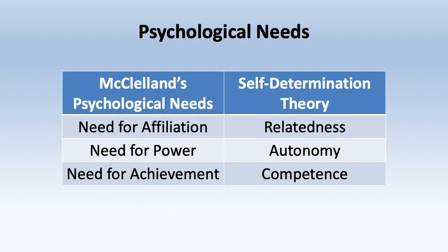Comparing self-determination theory with McClelland's psychological needs, the need for affiliation is very much related to relatedness. The need for power may be related to autonomy — we can't have power without autonomy. The need for achievement is closely connected to competence — achieving challenging tasks gives us a sense of competence. Interestingly, Plato also talked about three basic needs, going back to ancient times.